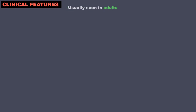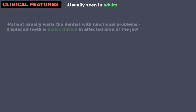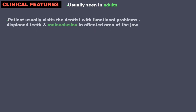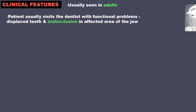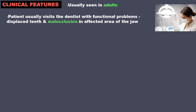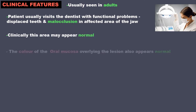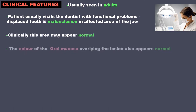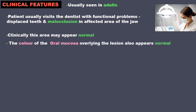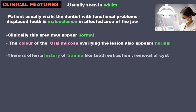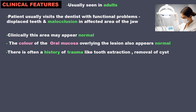Clinical features: usually seen in adults, the patient visits the dentist with functional problems like displaced teeth and malocclusion in the affected area of the jaw. Clinically, this area may appear normal and the color of the oral mucosa overlying the lesion also appears normal. There is often a history of trauma like tooth extraction or removal of cysts — very old history, so you will need to dig up the patient's history.